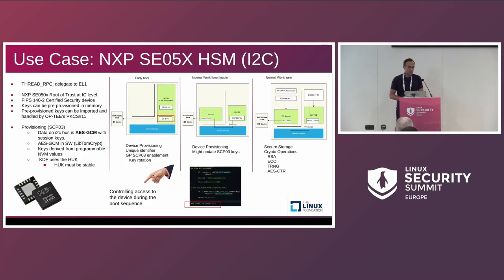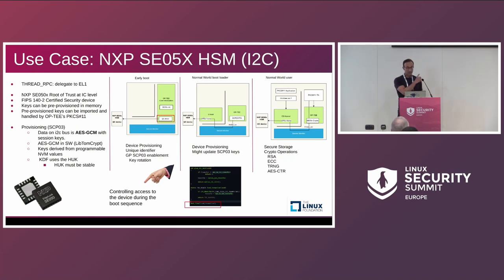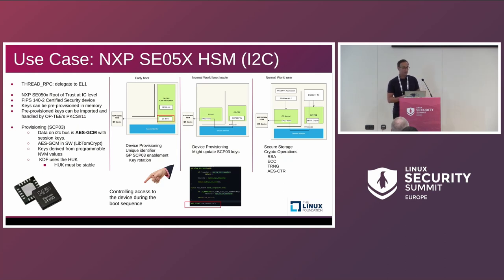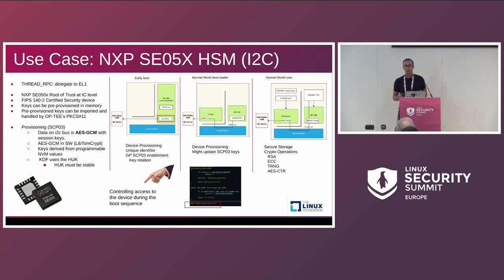The first case study is the NXP SE050 HSM — a hardware security module accessible via I2C that provides a root of trust at the IC level. An important feature NXP offers is that you can pre-provision keys directly on the device, so when your system boots you can use those keys immediately. It has RSA, ECC, and RNG — it's a very full-featured device.